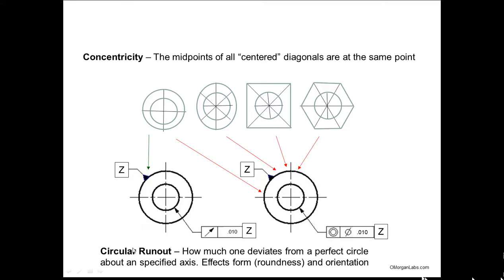So circular runout: how much one deviates from a perfect circle about a specified axis. So you have an axis. In this case, it's axis Z. It's pointing to the circumference, but in GD&T, that means your axis. So your circular runout affects form, the roundness of it, how round it is, and orientation.